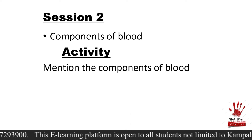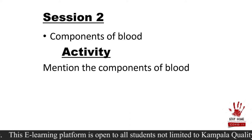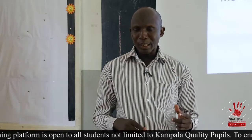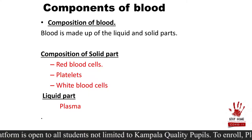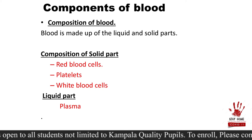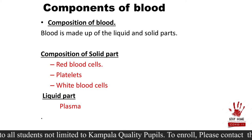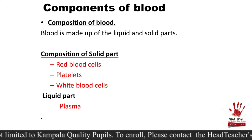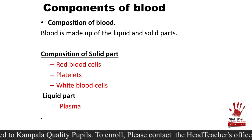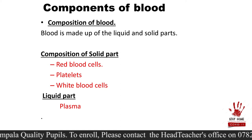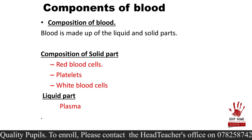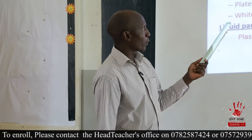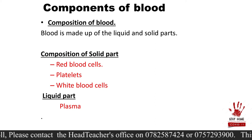So what does our blood comprise? What does our blood contain? These are what we call the components of blood. Our blood is made up of two major things — the liquid and the solid parts. The solid part of blood comprises three main components: one, red blood cells; two, platelets; three, white blood cells. Then the liquid part of blood comprises something we call plasma. So basically the components of blood are four: red blood cells, platelets, white blood cells, and plasma.